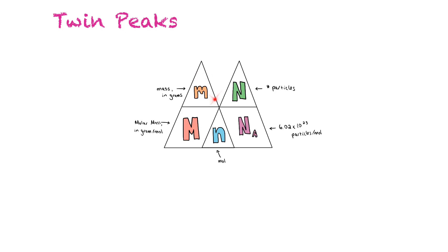It looks like two triangles merged together. If you have this, you can always determine which way to go to calculate. For instance, if I knew a mass and wanted to find out the number of particles, you're going to have to take two steps. The first thing you're going to do is take the mass and then the molar mass to find the number of moles.